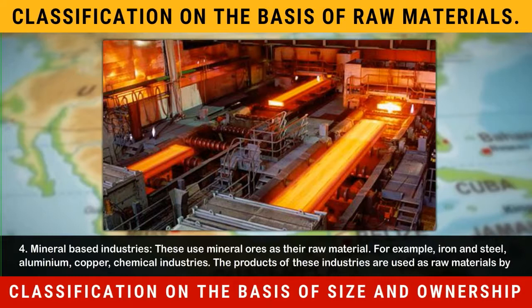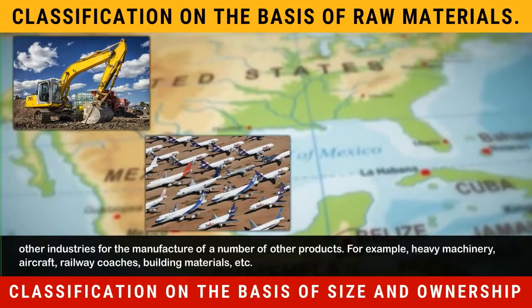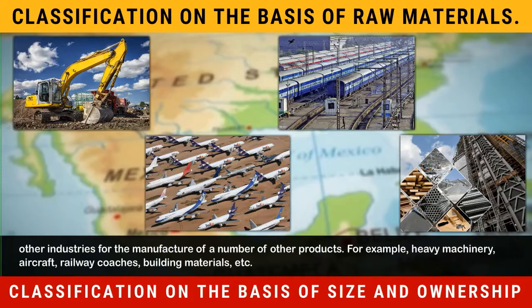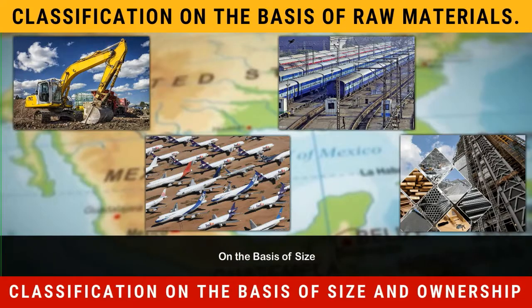For example, iron and steel, aluminum, copper, chemical industries. The products of these industries are used as raw materials by other industries for the manufacture of a number of other products. For example, heavy machinery, aircraft, railway coaches, building materials, etc.